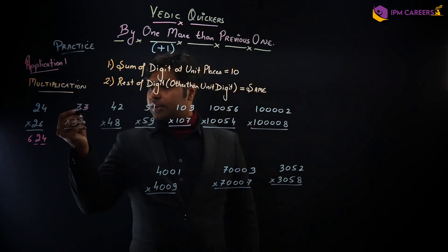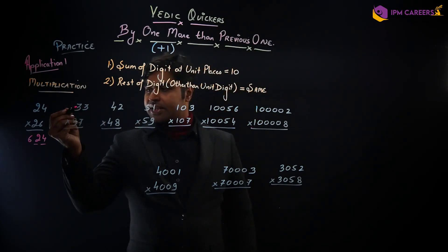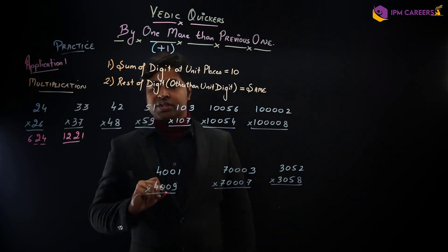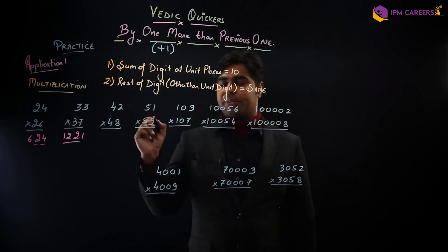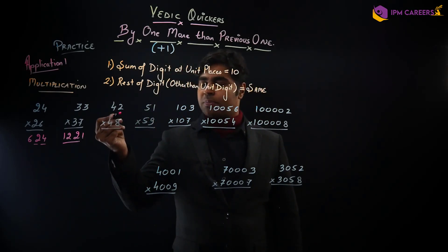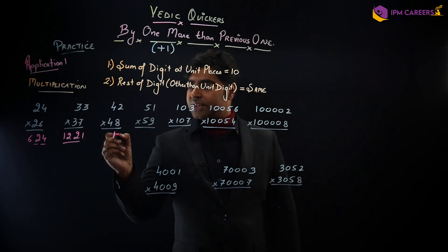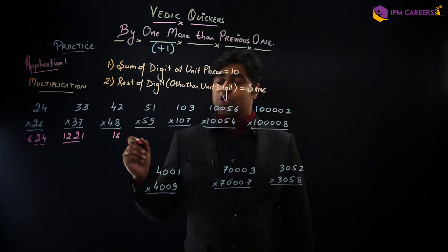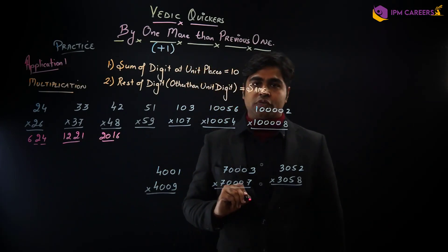We will write in two digits, 7 plus 3 is 10 and the rest of the rate is 3 and 3 is same. 7, 3 is 21 and 3, 4 is 12, so 1212 is your answer. Here also the method, because 8 plus 2 is 10 and the rest of the rate is same. So 8 into 2 is 16 and 4 is the multiplication of the next number 5, so 4, 5 is 20. So 2016 is your answer.